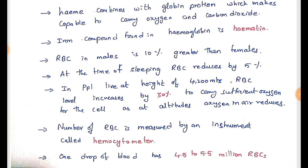RBC in males is 10% greater than in females. Blood itself is half a liter greater in males compared to females. At the time of sleeping, RBC reduces by 5%. This is because our body doesn't need as much oxygen when sleeping compared to when it is at work. When we are awake, every muscle and every tissue needs oxygen for its metabolism and function. While sleeping, most body parts are at rest, so RBC content is reduced according to the quantity of oxygen required.